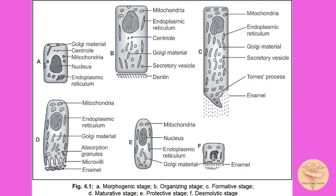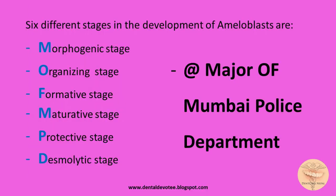The six stages are: morphogenic stage, organizing stage, formative stage, maturative stage, protective stage, and desmolytic stage. This can be easily memorized in the correct order with the help of the mnemonic: Major of Mumbai Police Department.